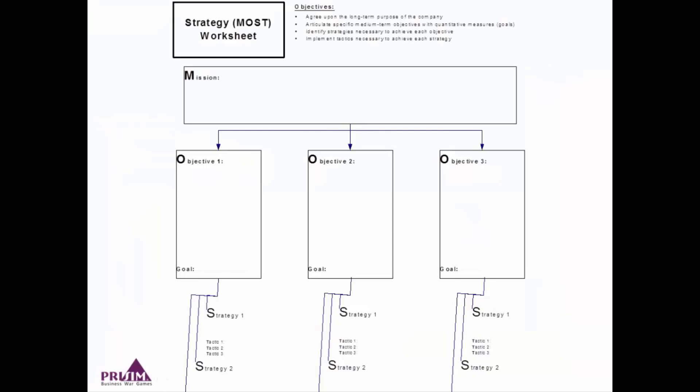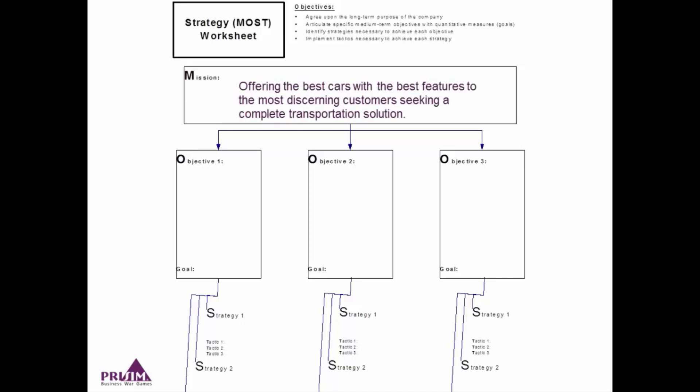Here's a sample MOST for a hypothetical auto company — one we made up — laid out in a tree diagram. A key point is that a mission is very broad but points the organization in a specific direction, and everything else follows and aligns from there. This company's mission: offer the best cars with the best features to the most discerning customers seeking a complete transportation solution. It's high level, but it gives a vision — not just any cars, but the best cars, and not just any customer, but discerning customers.